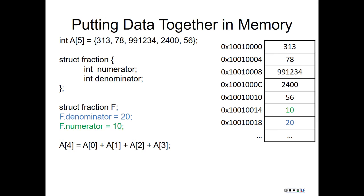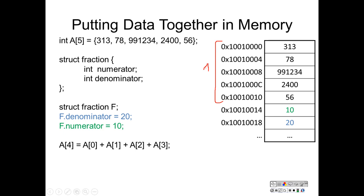Here we have the five-element array from before and an instance of struct fraction. The compiler could lay out the array before or after the struct — here we show the array coming before the struct. The array starts at address 0x100100, and the struct starts at address 0x10010014. The first five words starting at 0x100100 belong to array A, and the next two words in memory belong to struct f.